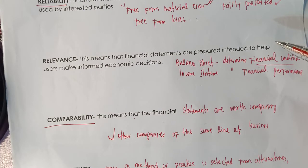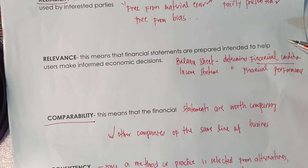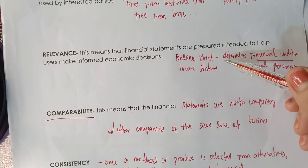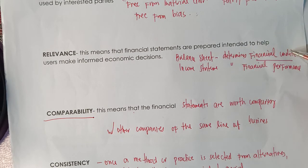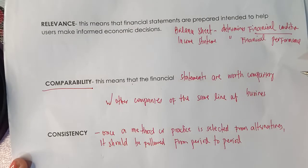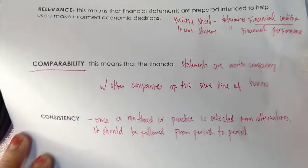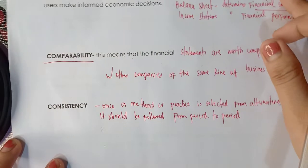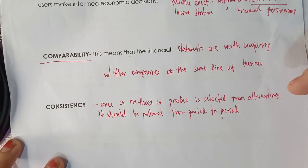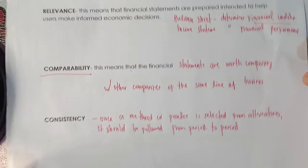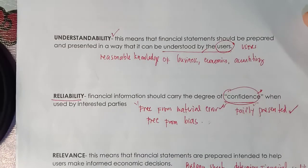Continuing the summary: relevance means financial statements are prepared to help users make informed economic decisions — the balance sheet determines the financial condition of the entity, and the income statement determines financial performance. Comparability means financial statements are worth comparing with other companies of the same line of business. And consistency means that once a method or practice is selected, it should be followed from period to period. That concludes our discussion on the qualities that financial statements should possess.